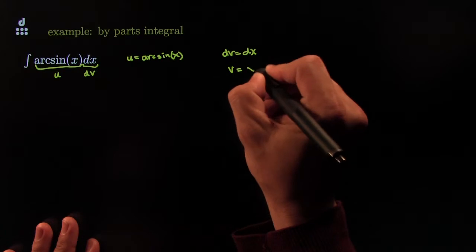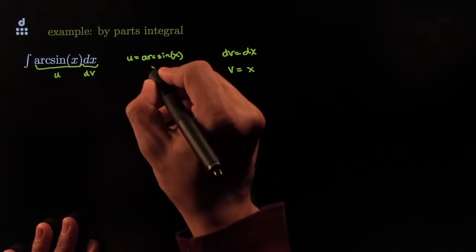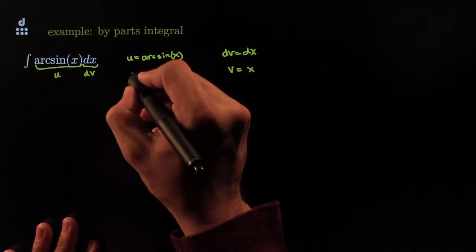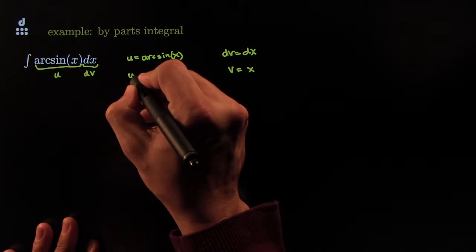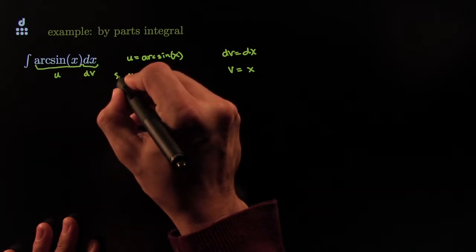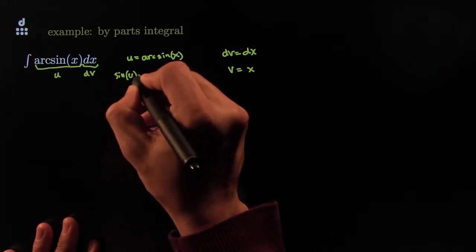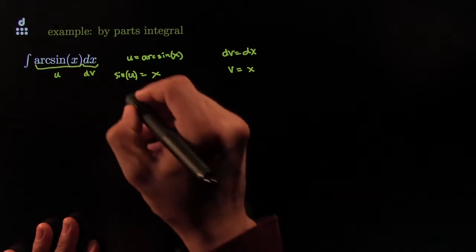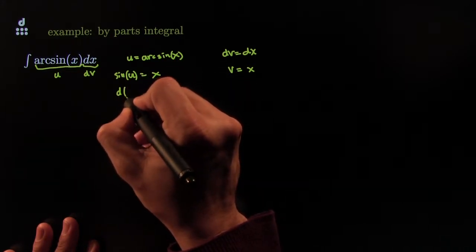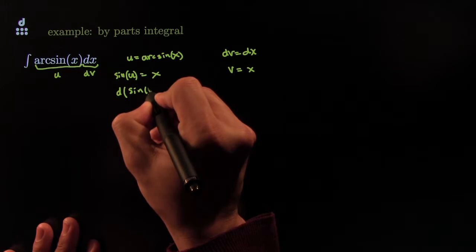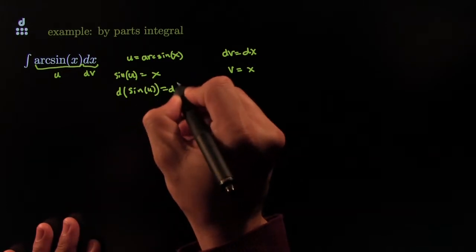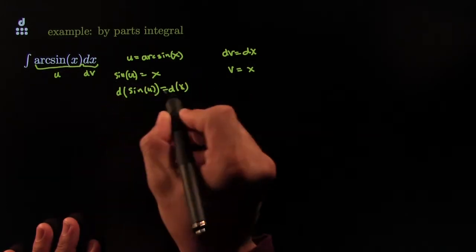This forces v to be equal to x. And here we've got to take the derivative of this piece. So I could say this is the same thing as saying that sine of u is equal to x. And that, of course, is the same thing as saying that the derivative of sine of u is equal to the derivative of x. This is called slapping d on both sides.